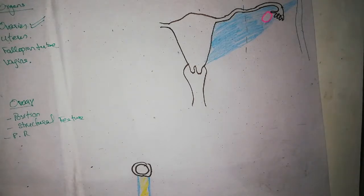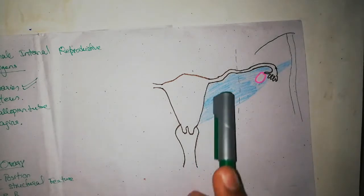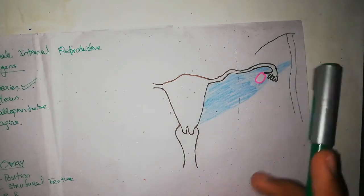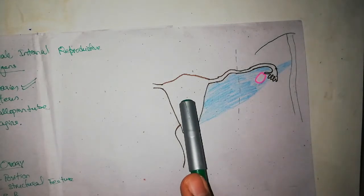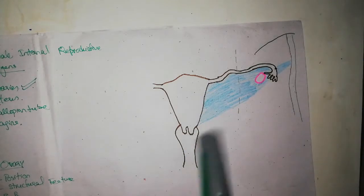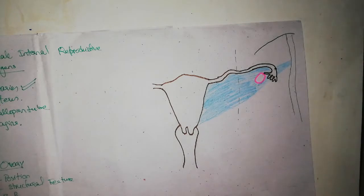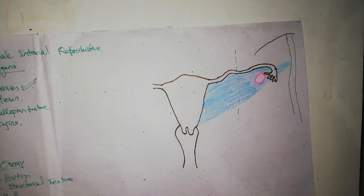As I showed here, the ovaries are present laterally, close to the lateral pelvic wall. The uterus is approximately at the midline of the body, and the vagina is below it. The ovaries are present laterally, close to the lateral pelvic wall — inside a fossa called the ovarian fossa.